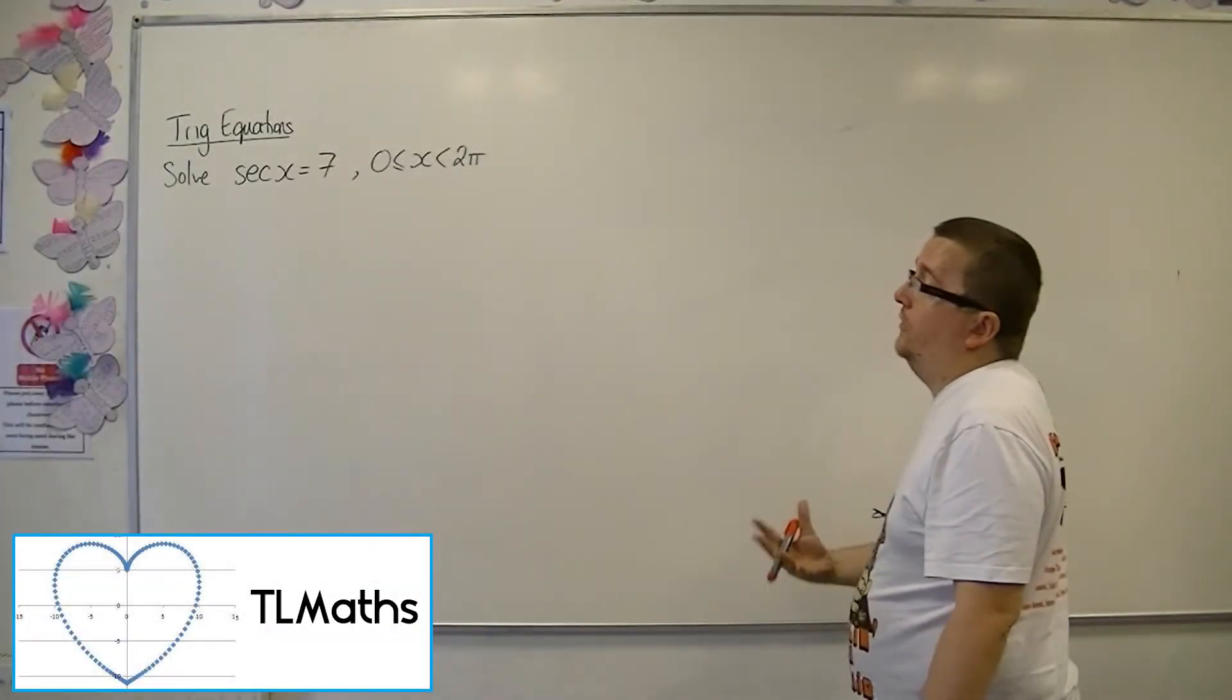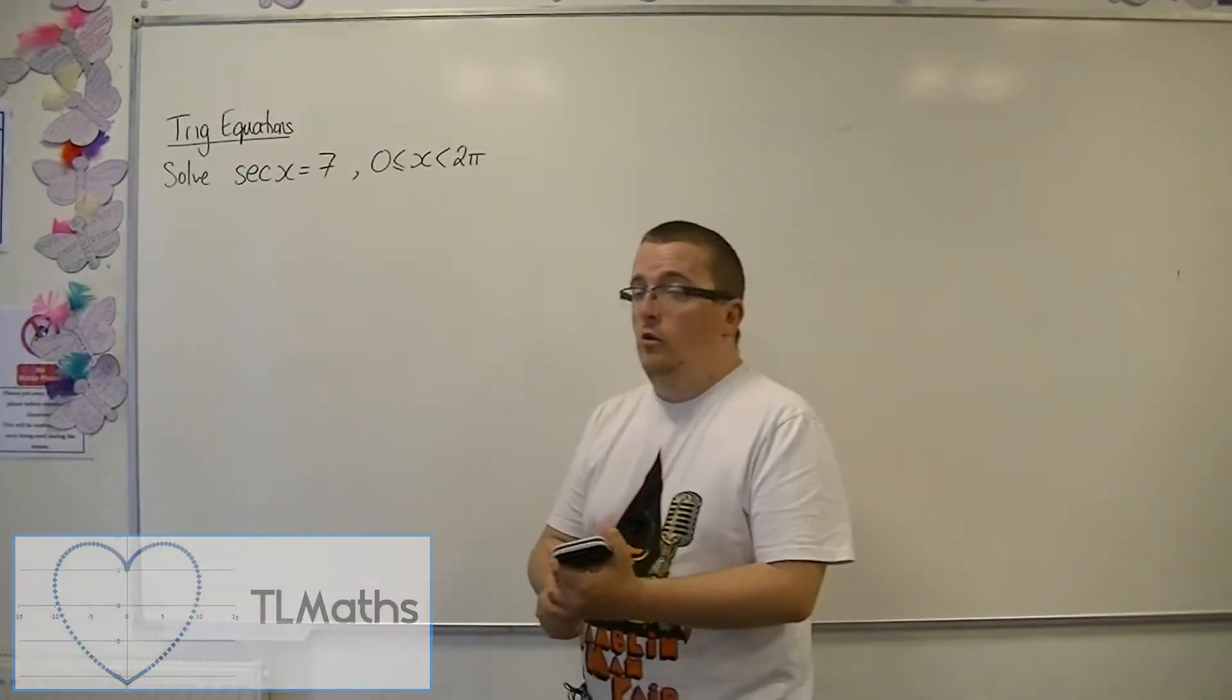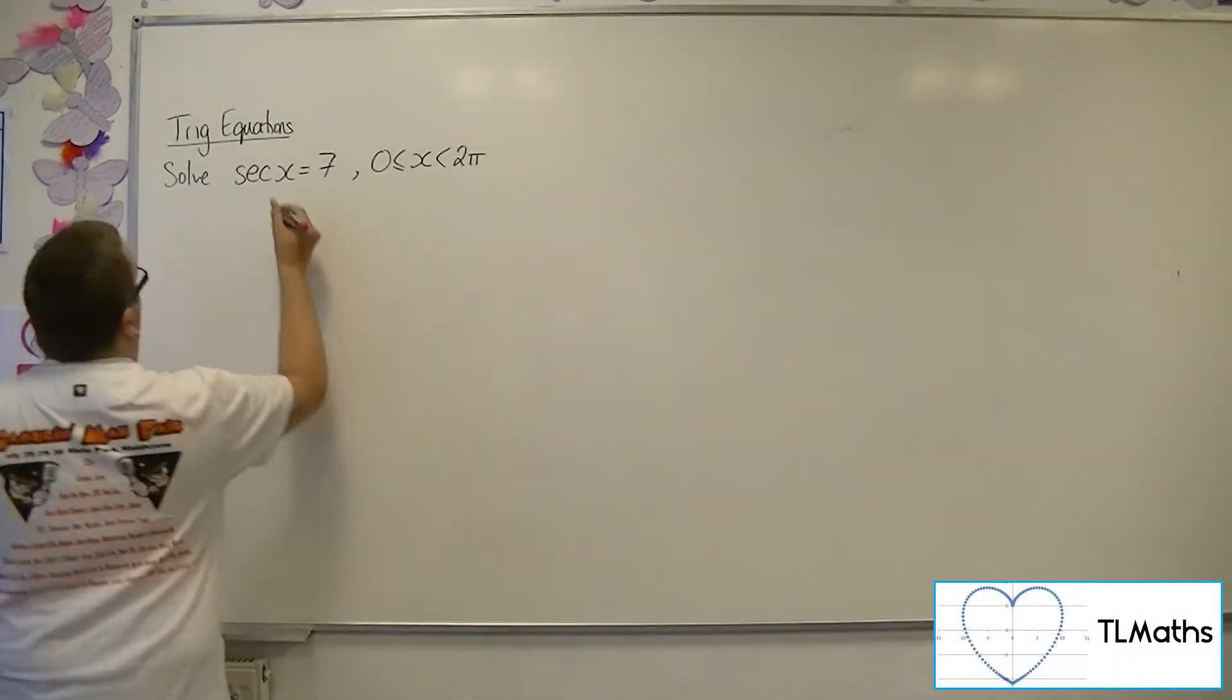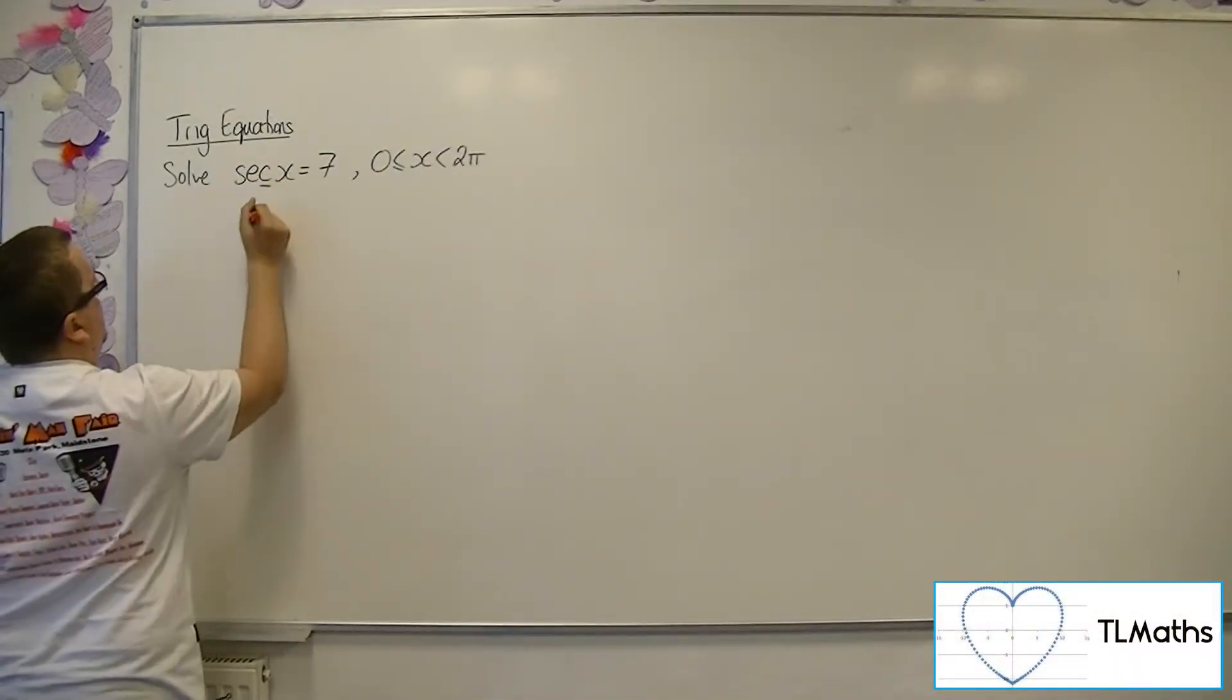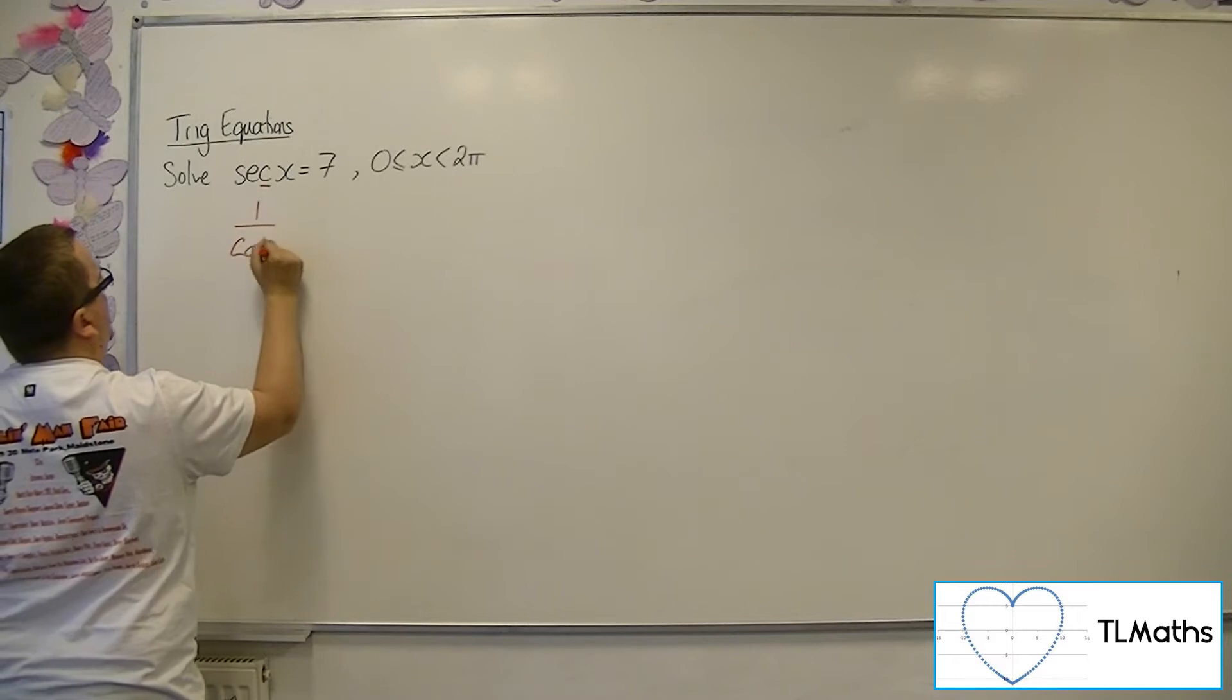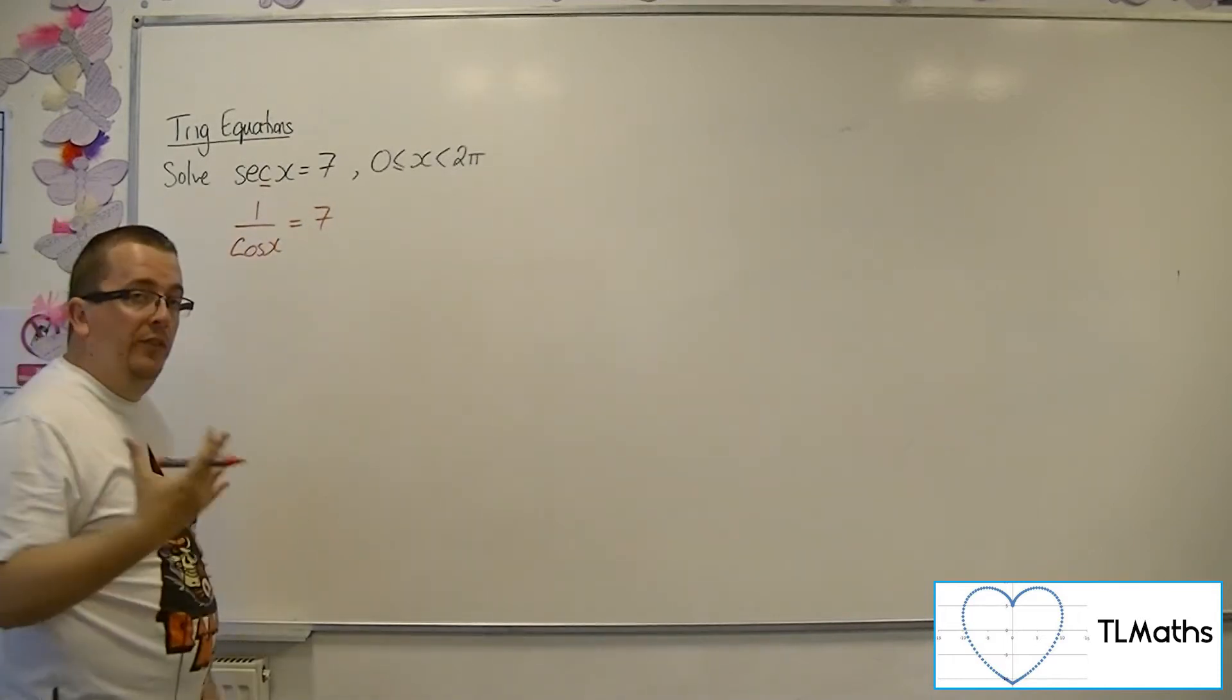Let's say I want to solve sec(x) = 7 between 0 and 2π radians. So sec, using the third letter rule, is 1 over cos(x). So 1 over cos(x) is equal to 7.